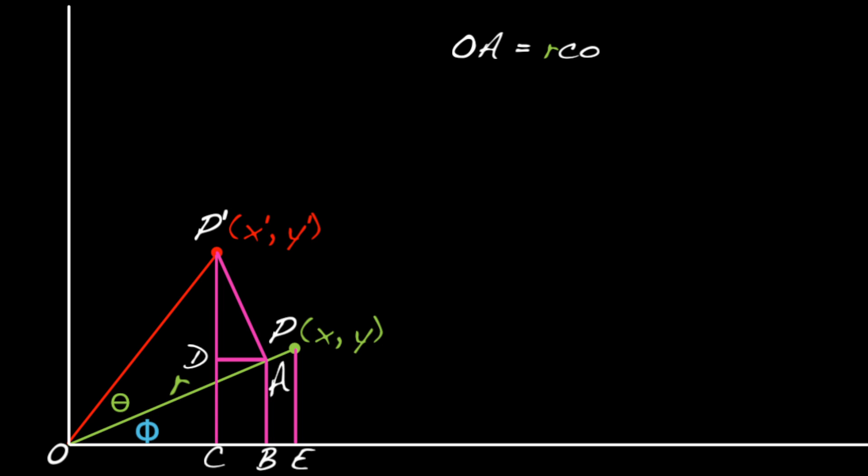In the previous exercise, you should have found that length OA is r cosine theta. But why?